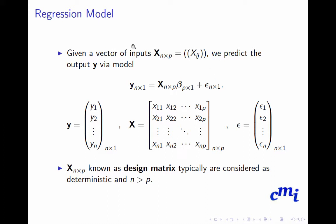In the multiple linear regression model we are going to represent it in matrix notation. Given a vector of inputs x, we predict output y via the model y = Xβ + ε, where y is the vector of n observations (y₁ to yₙ), X is the feature matrix of order n×p, and ε is the residual or error vector. So we have n samples, p features, and n output labels.